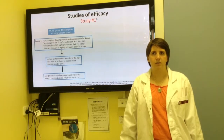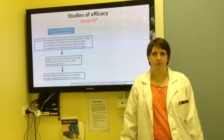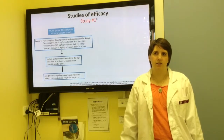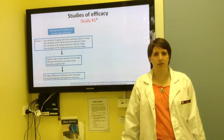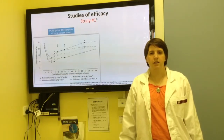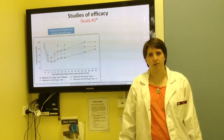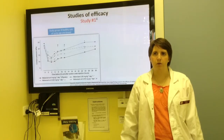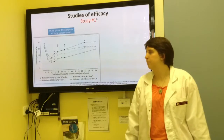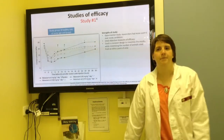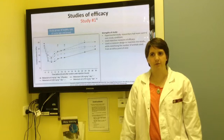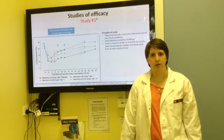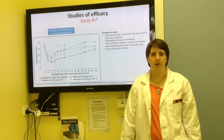Synovitis was experimentally induced in one of their stifle joints. The efficacy of Meloxicam's analgesic properties were assessed objectively and subjectively. Here is an illustration of one of the objective measures: contact pressure. As you can see from the graph, the cats given the placebo were most reluctant to put weight on the affected limb, while cats treated with Meloxicam were willing to put more pressure on the limb. The strength of this study was that it was an experimental study, so the researchers had more control, which meant fewer possible confounding variables, and they used objective measures.